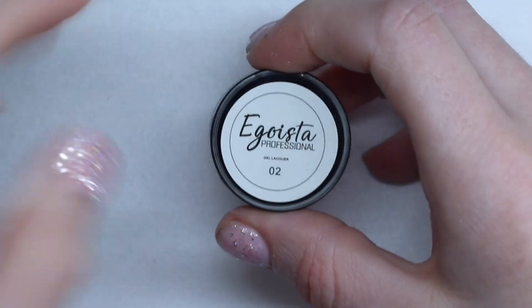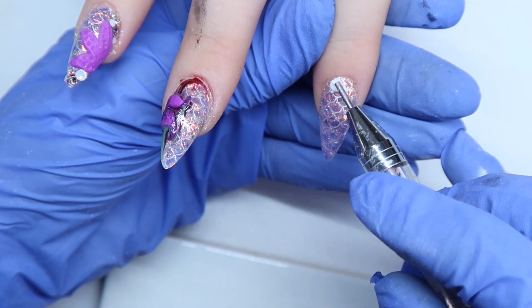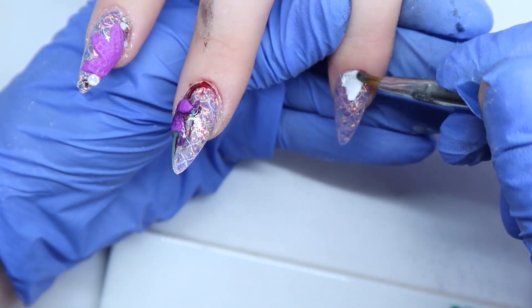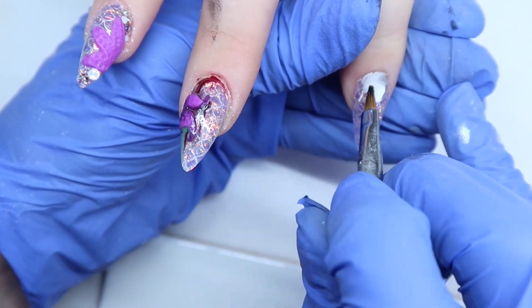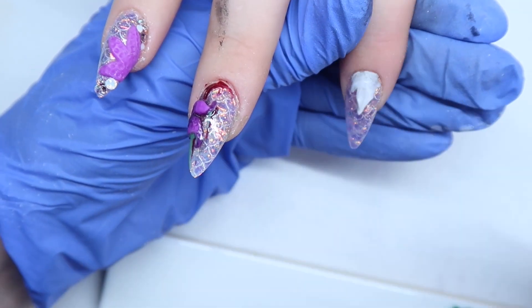For more texture I'm using Egoista brand number 2. And this is another 4D gel. This one's white. And I'm applying it near the cuticle area. And this is going to be kind of like rotting flesh, kind of like her cuticle has come down and created like a rotting flesh over top of the mermaid scales.